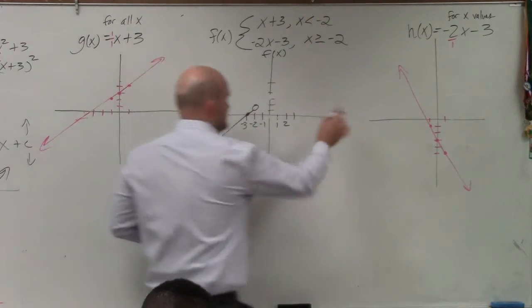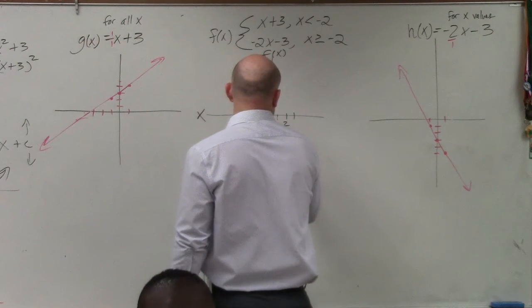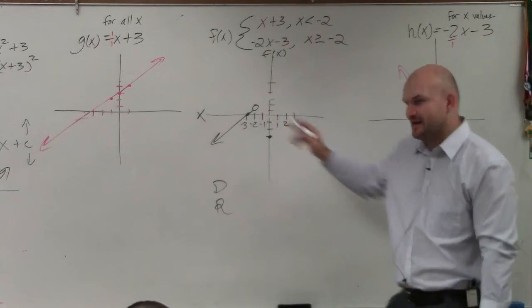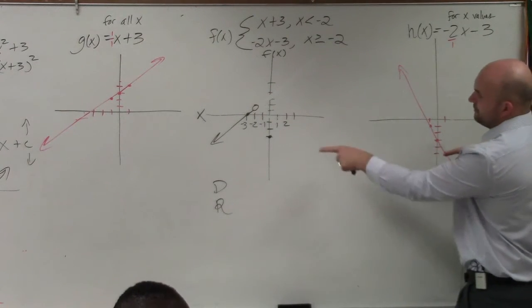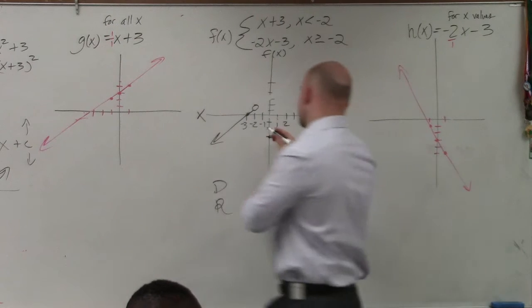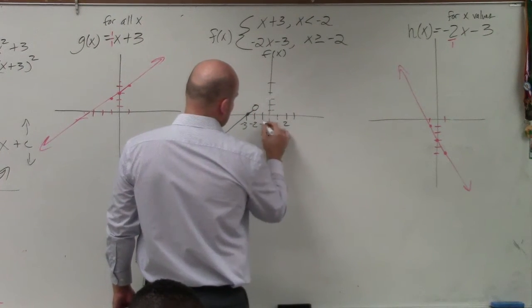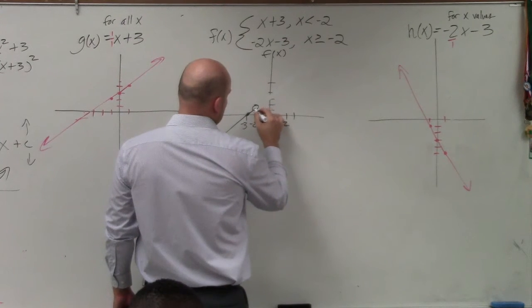So, if I'm graphing this function, I know it has a y-intercept at negative 3. One, two, three. Well, I'm just going to want to go to the left, right? I want to figure out how far it's going to the left, because I know the graph is going down 2 to the right, but up 2 to the left, up 2 to the left.